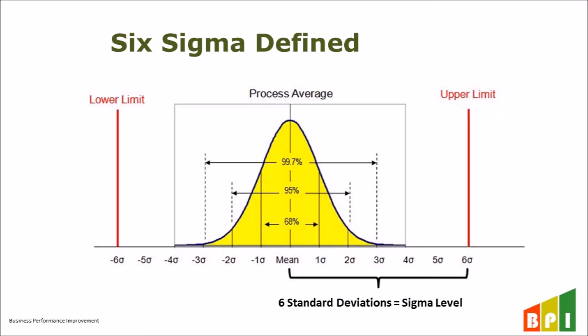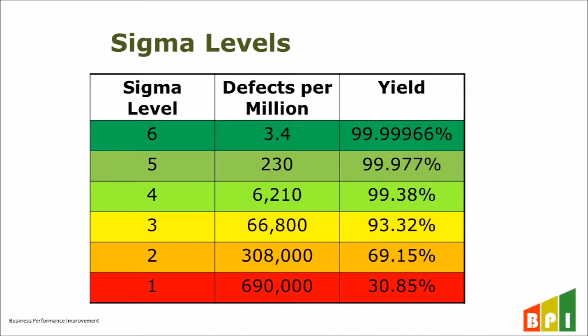The number of standard deviations from the average to the nearest limit is also called the Sigma level. Sigma levels equate to a yield percentage or success rate. A Six Sigma process only has 3.4 defects for every one million times you run the process. That is nearly perfect. On the other hand, a One Sigma process only has a 31% yield. A Three Sigma process has a success rate or yield of 93%, so it will fail 7% of the time on average.